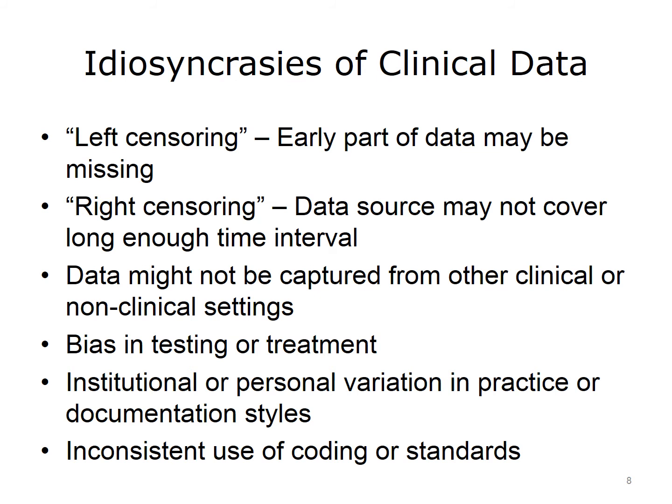Let's revisit censoring, where some of the data is missing. There may be left censoring, in that the early part of the data may be missing. For example, the first instance of a disease in a record may not be when the disease was first manifested — perhaps because it was not yet diagnosed. There is also right censoring, where the data source may not cover a long enough time interval to cover the entire time course of the patient and their disease. Another idiosyncrasy is that the data might not be captured from other clinical or non-clinical settings — for example, data residing at other hospitals or health systems, or data not available at all, such as with over-the-counter drugs.